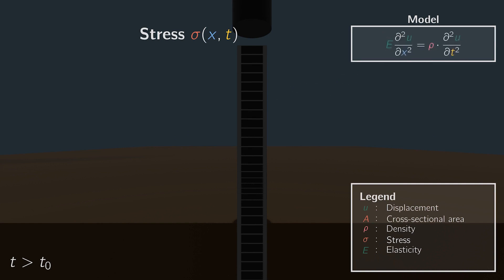As you may remember, the wave speed through a bar can be calculated as the square root of the elasticity E, divided by the density of the material rho. Taking this property into account and rearranging the terms, we can further simplify our model. As you can see, our derived model is now in the form of the standard wave equation.